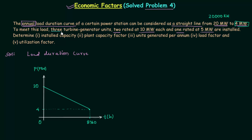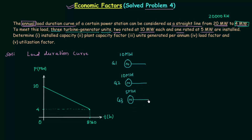In the problem, there are three turbine generator units. Generator G1 and generator G2 are each rated at 10MW, and generator G3 is rated at 5MW — and they are all feeding the source. For the first part, the installed capacity PC = 10 + 10 + 5 = 25MW. This is the answer to the first part.